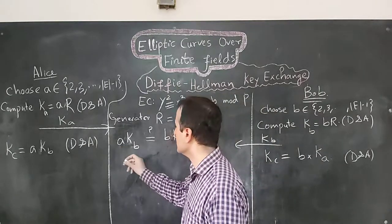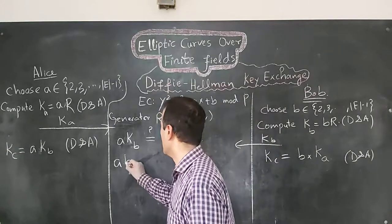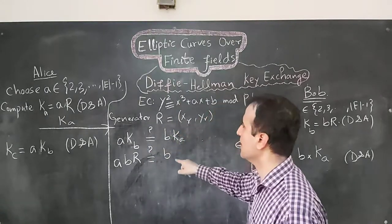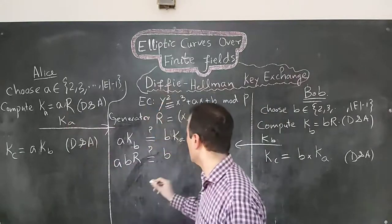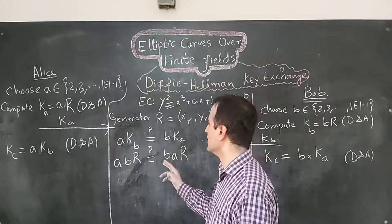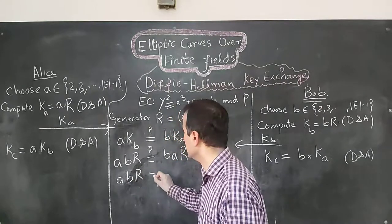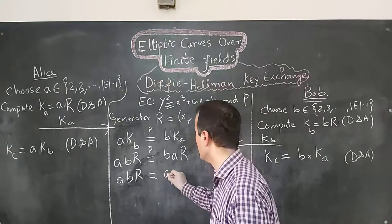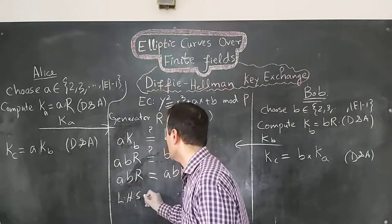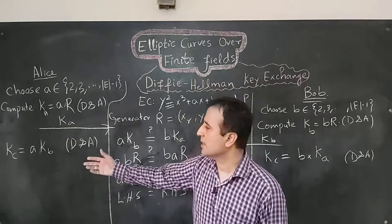We expand this equation: A times KB equals A times (B·R). Is it the same as B times KA, where KA equals A·R, giving B times (A·R)? Since A and B are numbers and numbers are commutative, we can switch their order. Hence A·(B·R) equals B·(A·R), so the left-hand side equals the right-hand side, proving that the private key computed on both sides is actually the same key.